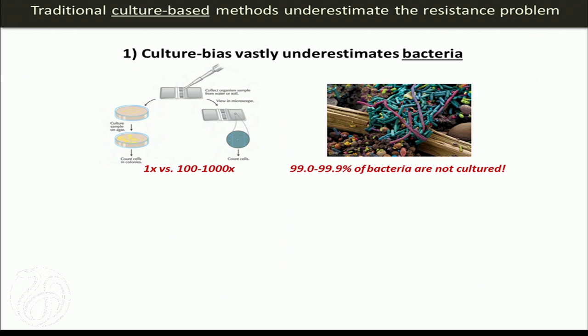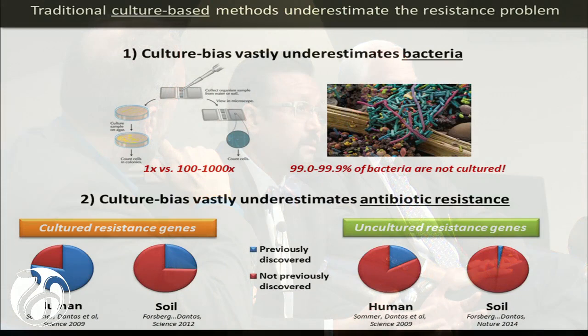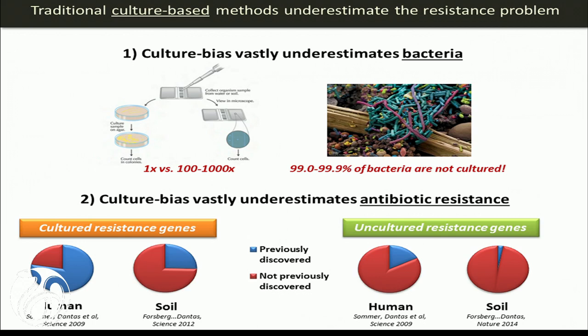My lab is interested in interrogating antibiotic resistance using an ecology and evolutionary framework. One of the first challenges we face is culture bias — the notion that we learn about microbiology by domesticating bugs in the laboratory. This ends up being a vast underrepresentation of microbes; current estimates suggest culture bias gives us maybe 1% or 0.1% of what all the microbes are doing.